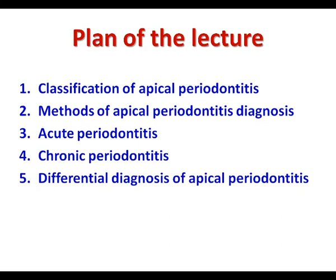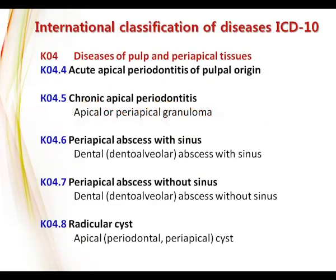The plan of the lecture covers: first, classification of apical periodontitis; second, methods of apical periodontitis diagnosis; third, acute periodontitis; fourth, chronic periodontitis; and finally, differential diagnosis of apical periodontitis. Classification of periodontitis is according to the international classification of disease, and all forms of periodontitis correspond to code K04.